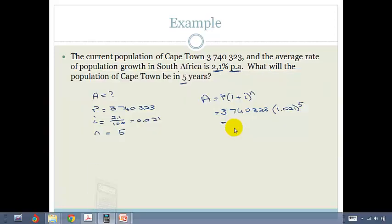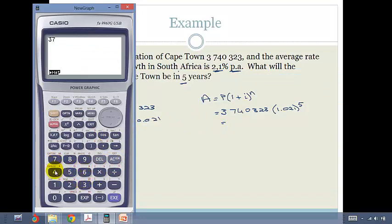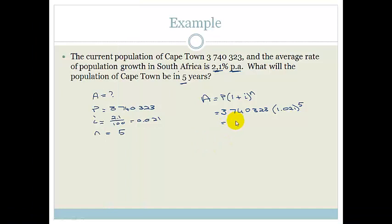And then we pop it in our calculator and we get, let's see, 3,740,323. Okay, let's check it, 3,740,323 times by bracket 1.021 bracket all to the power of 5. And we get 4,149,901. 4,149,901.783.